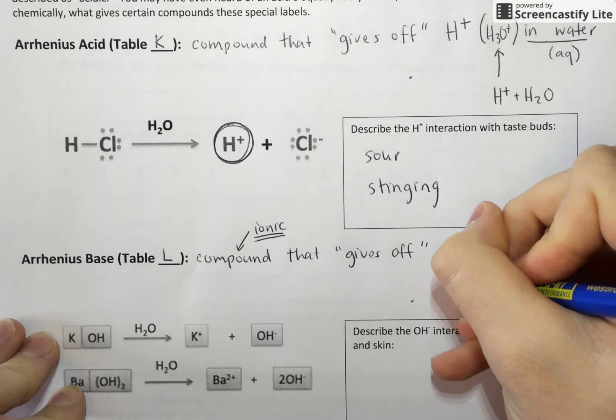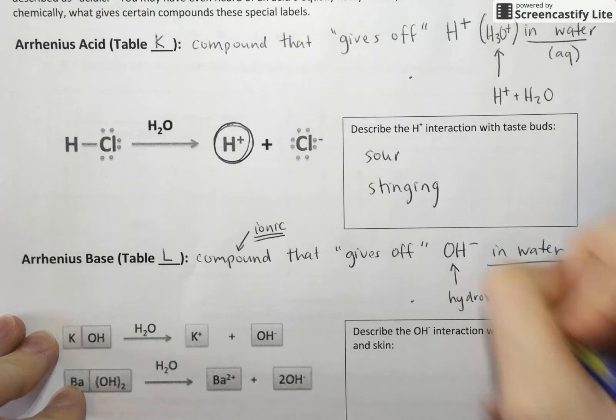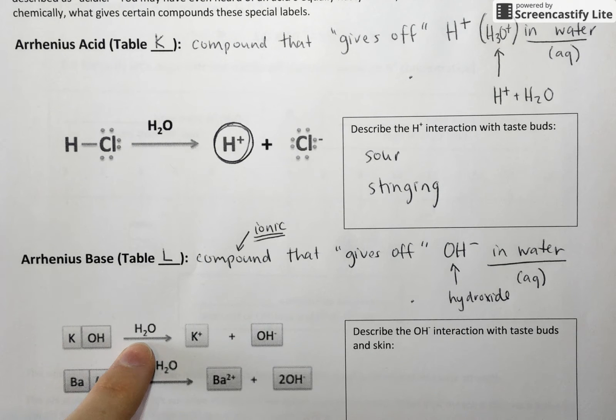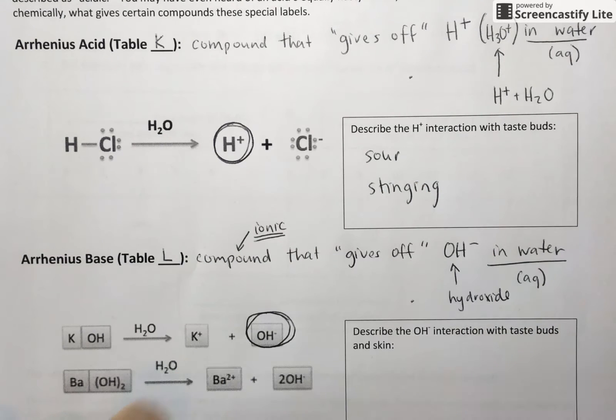So again, you can see examples of potassium hydroxide dissociating in water and producing the potassium ion, and your hydroxide ion that accounts for its basic properties.